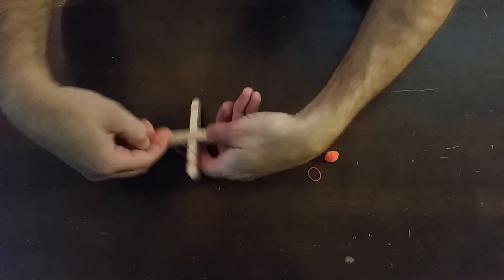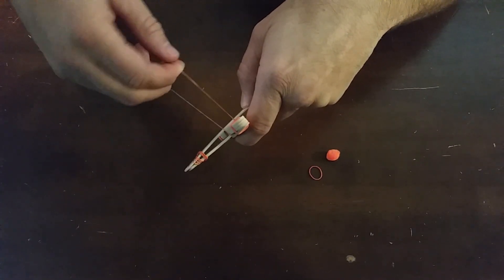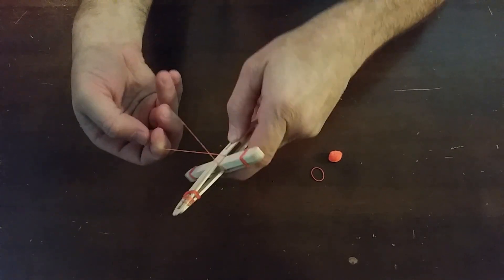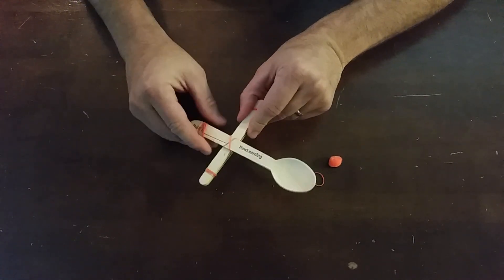Then what I want you to do is grab it with two fingers, lift it up, twist it, and bring it around the other side to make this cross. That helps make the catapult more stable.